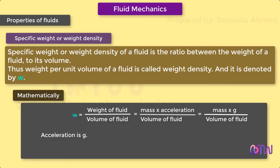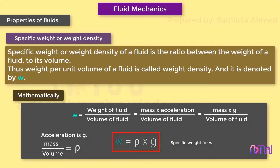We can notice that mass divided by volume is nothing but the density of the fluid. We can substitute rho here, and the equation will be rho into g. Therefore, w is equal to rho into g. The value of specific weight or weight density for water in SI units is 9.81 into 1000 newton per meter cube.